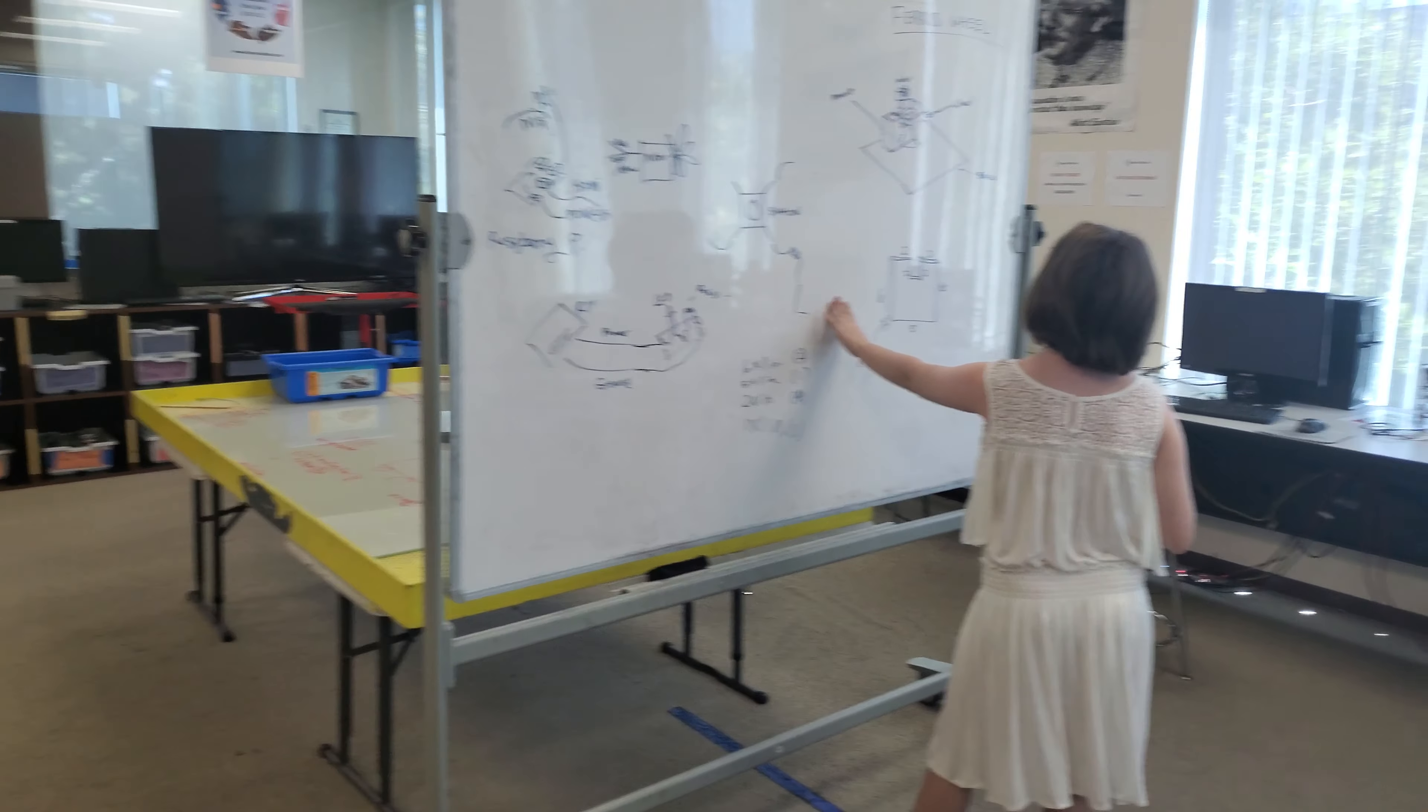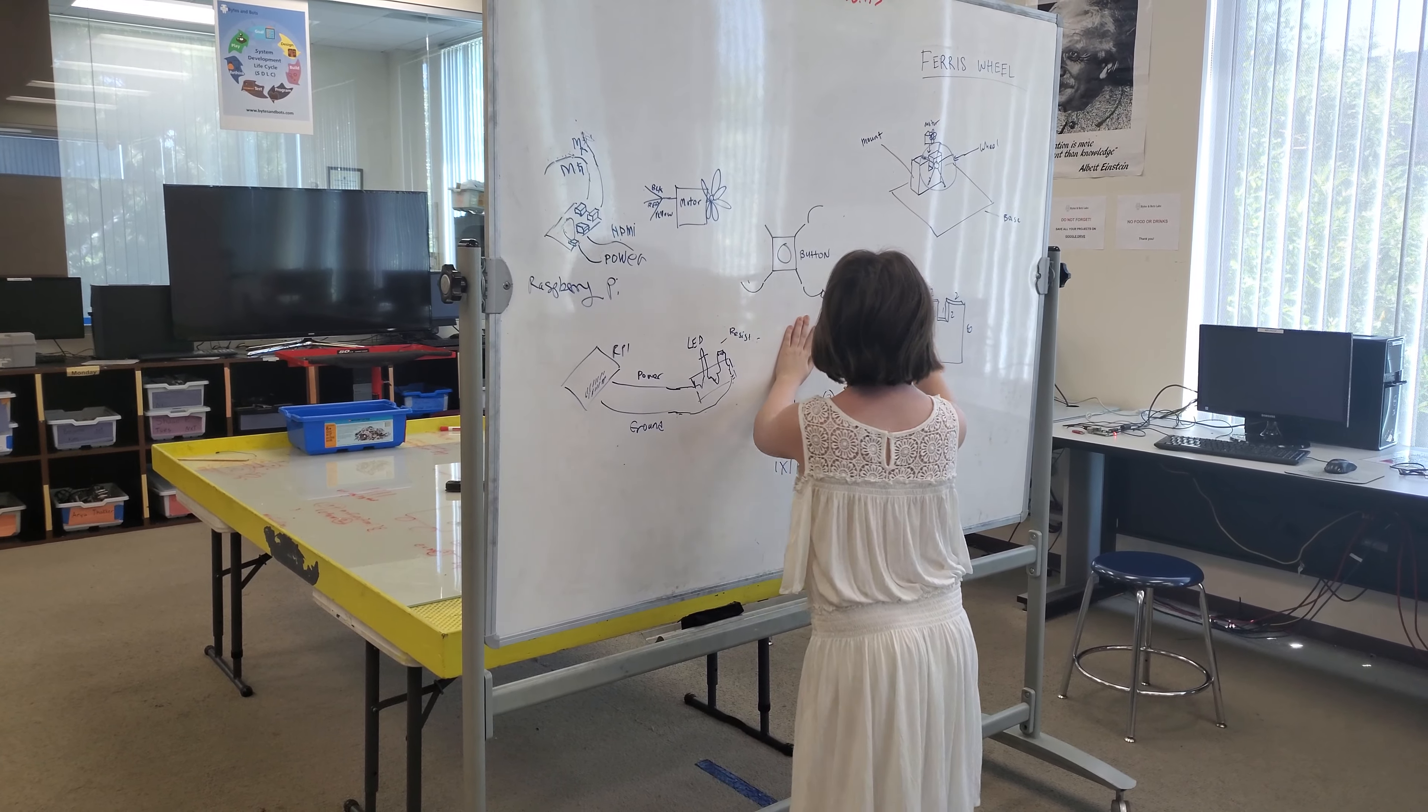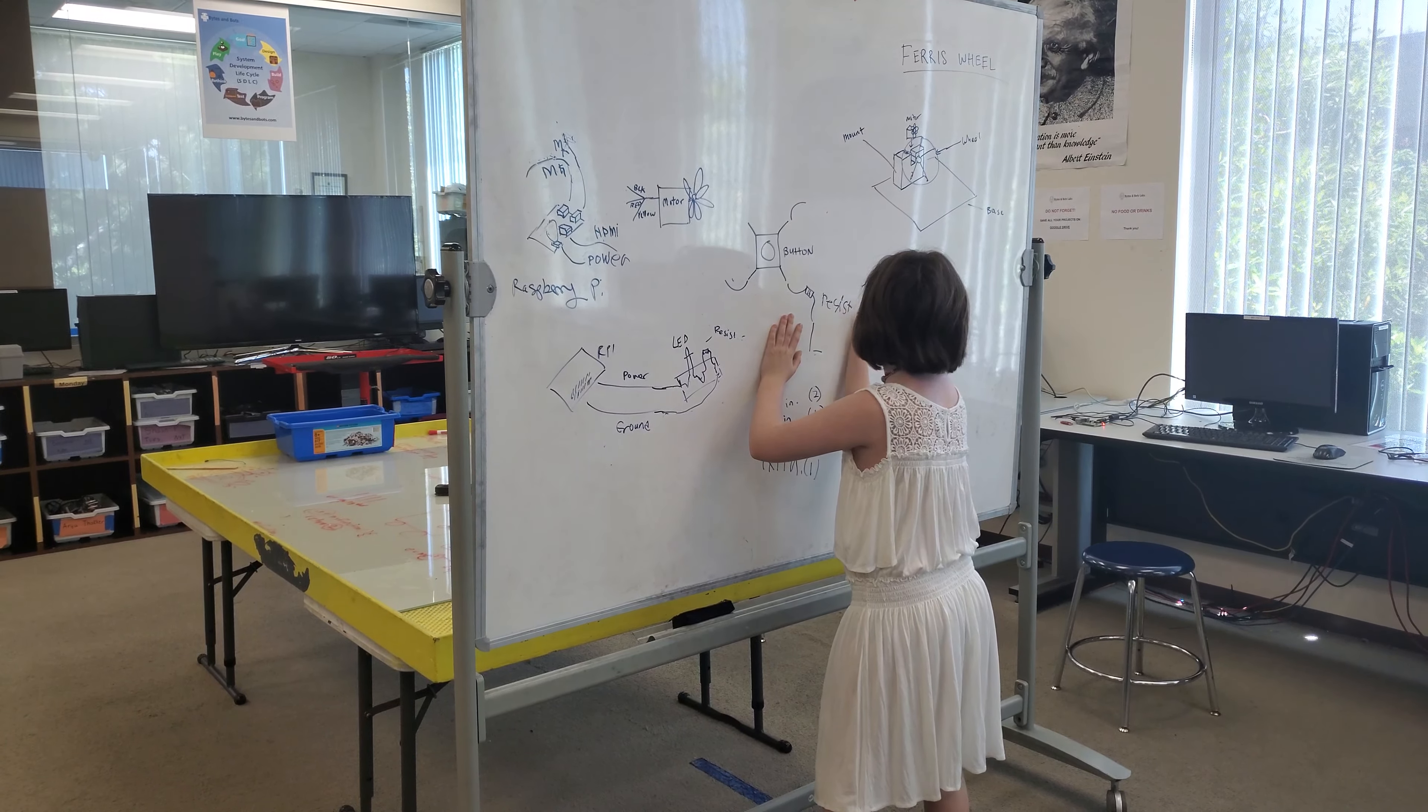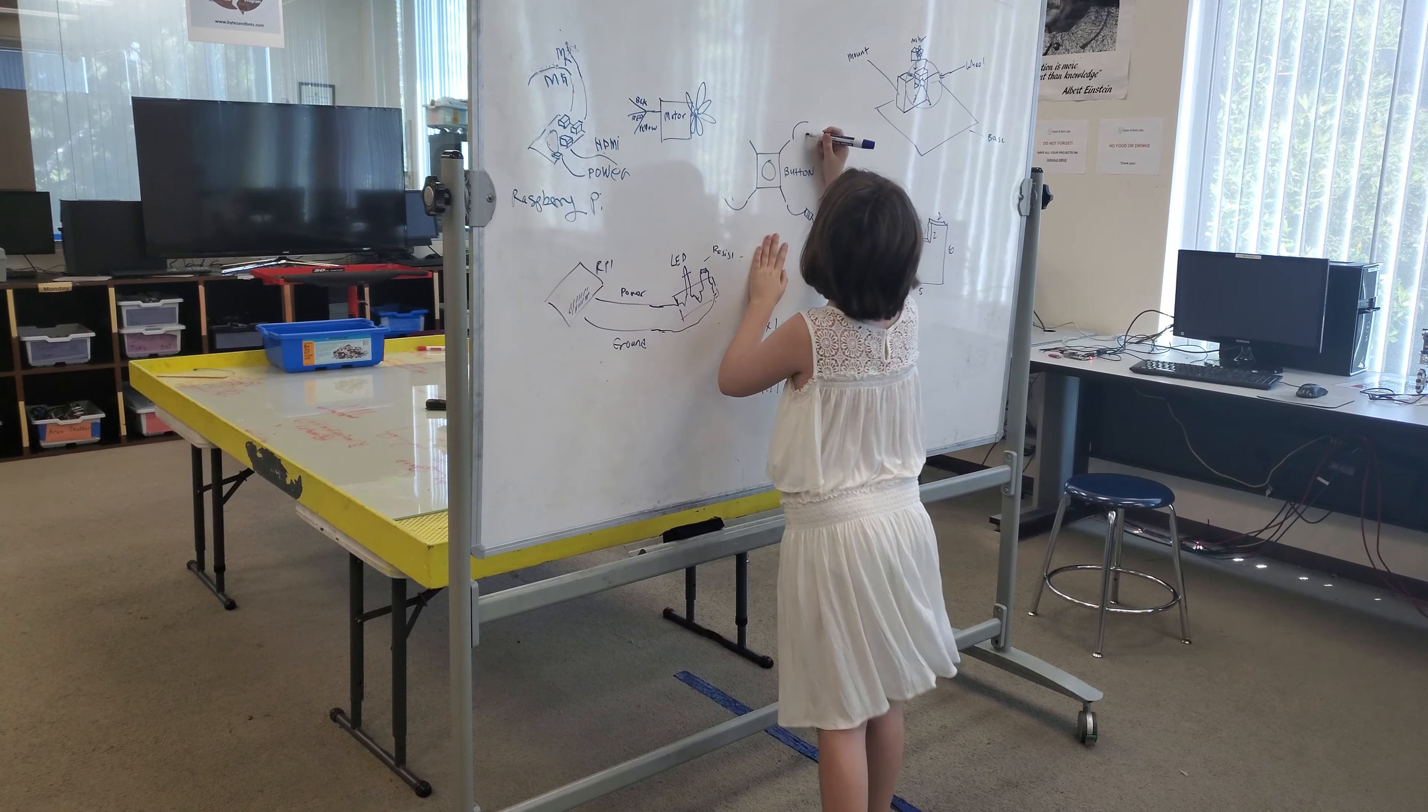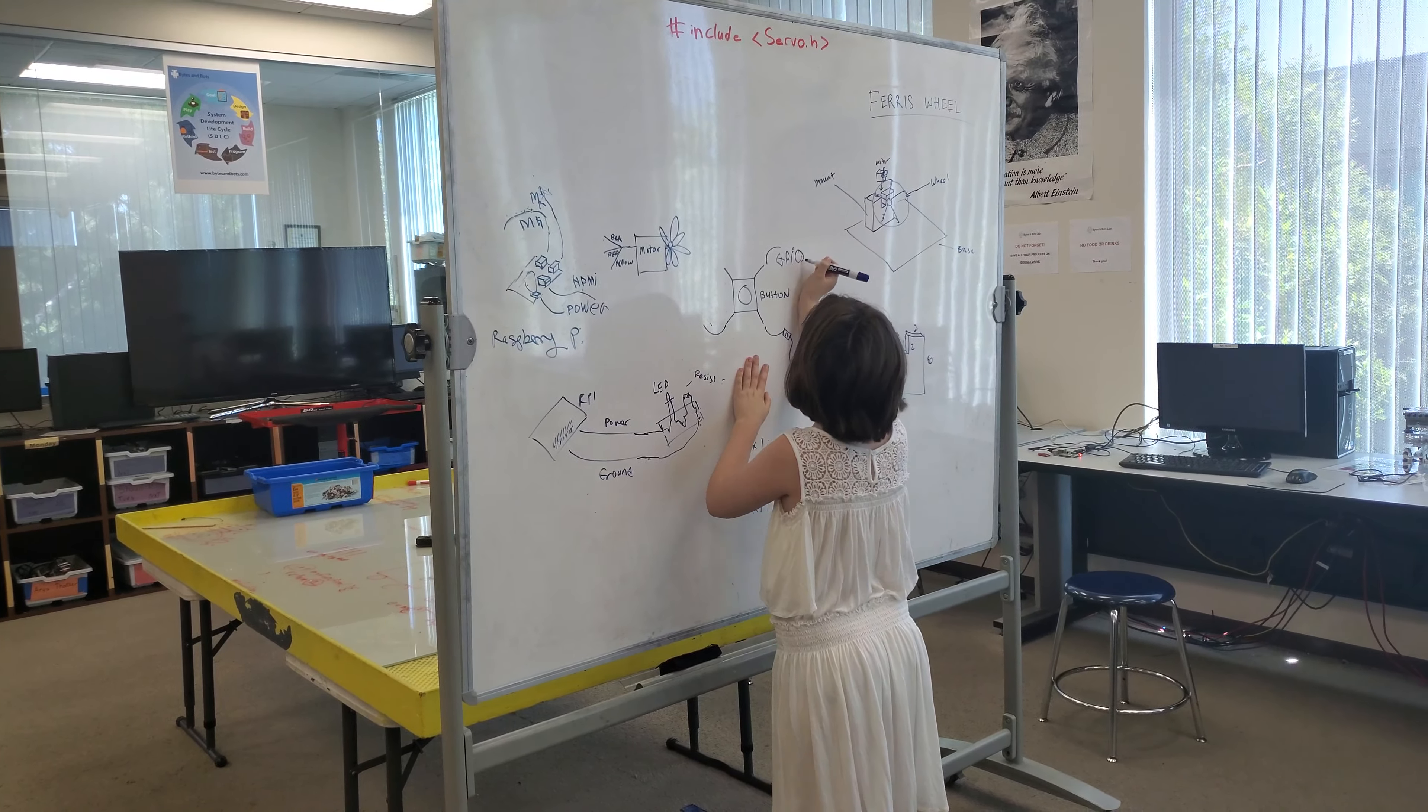Next is the button, right? The button. Yep. This is the resistor. The resistor goes to the bottom right. And the top right is the GPIO. On the bottom left is the power.